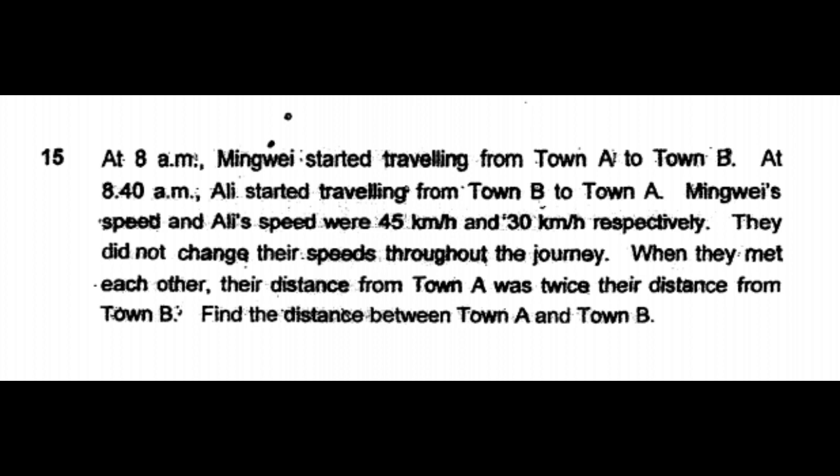Mingwei's speed and Ali's speed were 45 kilometers per hour and 30 kilometers per hour respectively. They did not change their speeds throughout the journey. When they meet each other, their distance from Town A was twice their distance from Town B. Find the distance between Town A and Town B.